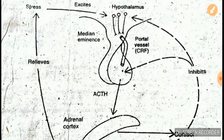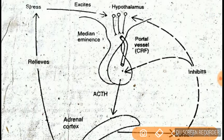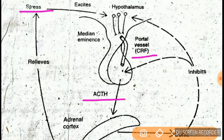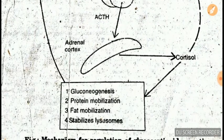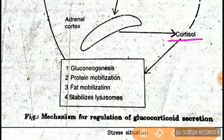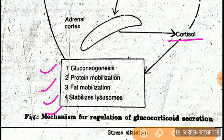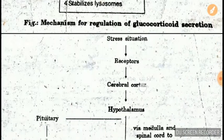In this diagram we can see how the stress response works. When stress occurs, the pituitary gland secretes CRF, that is the corticotropin releasing hormone, which then stimulates secretion of ACTH. ACTH has a stimulating action on the adrenal cortex, which secretes cortisol. The main functions of cortisol — which is very important — include gluconeogenesis, that is the synthesis of glucose from non-carbohydrate substances like proteins and lipids.